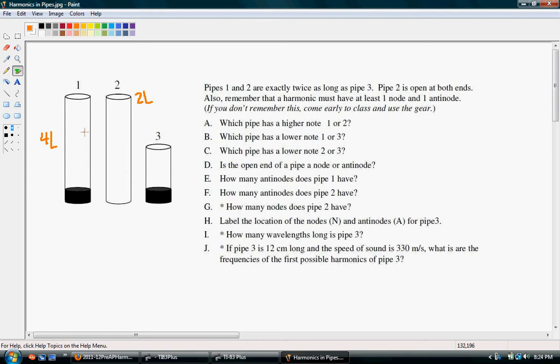Now, whichever one has the biggest wavelength is going to have the smallest or lowest frequency. Whatever has a shorter wavelength will have a higher frequency. Well, since the first wavelength for the first harmonic for this guy is going to be 4L, and since for the second guy it's only going to be 2L, since this has a shorter wavelength, it's going to have a higher frequency.